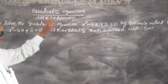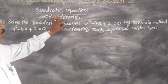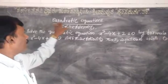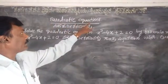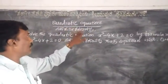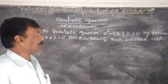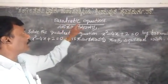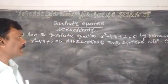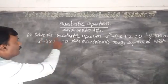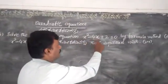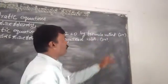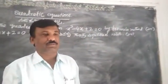Basically this problem comes from the chapter on quadratic equations. Solving x² minus 4x plus 2 equals 0 by the formula method is a compulsory question.